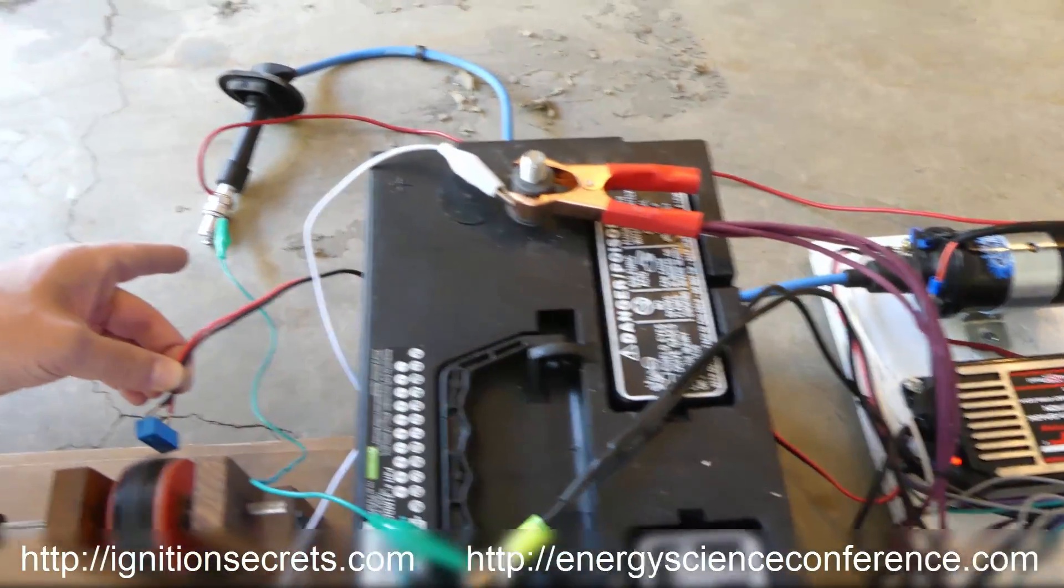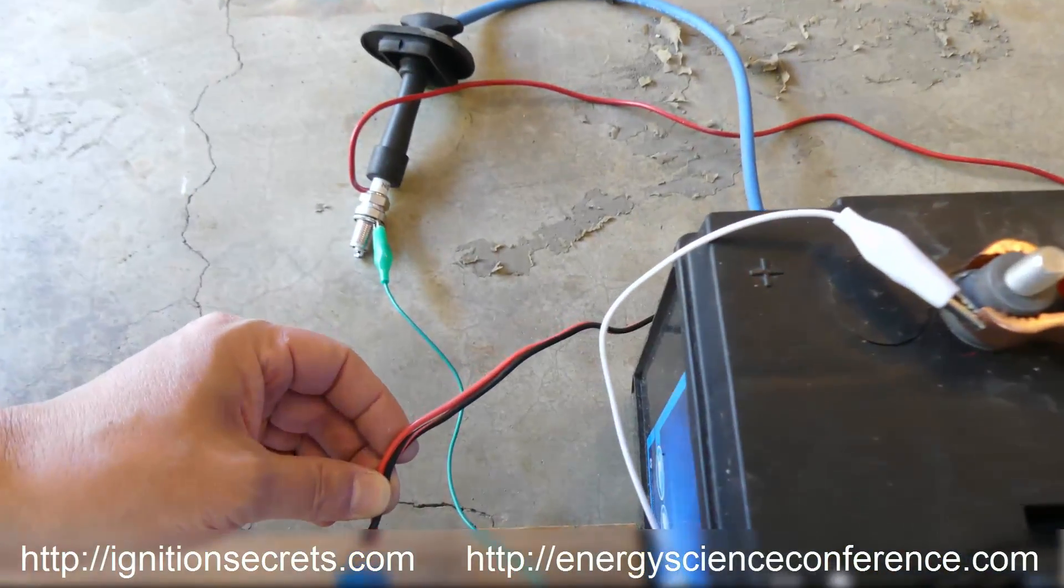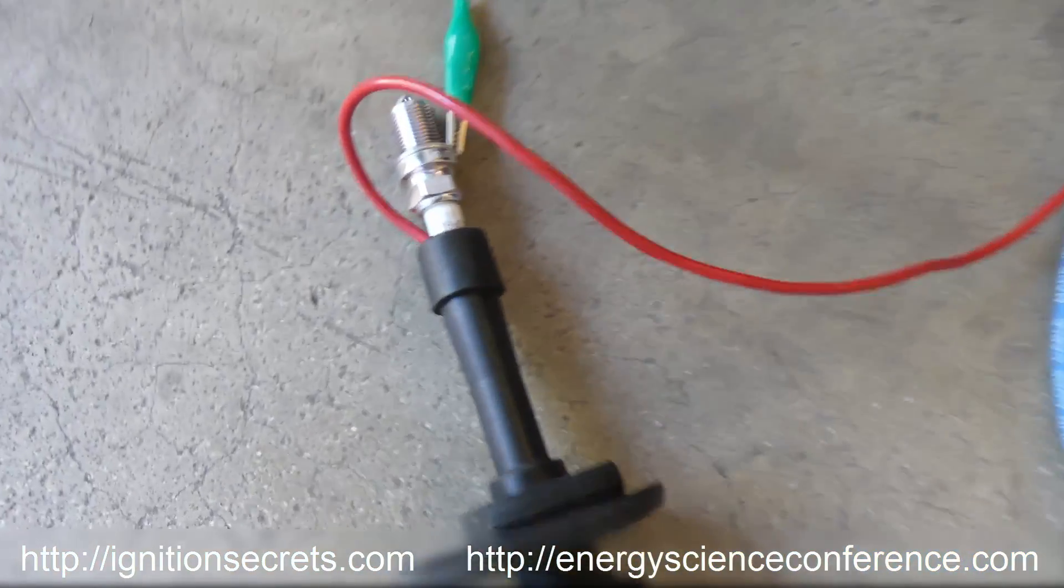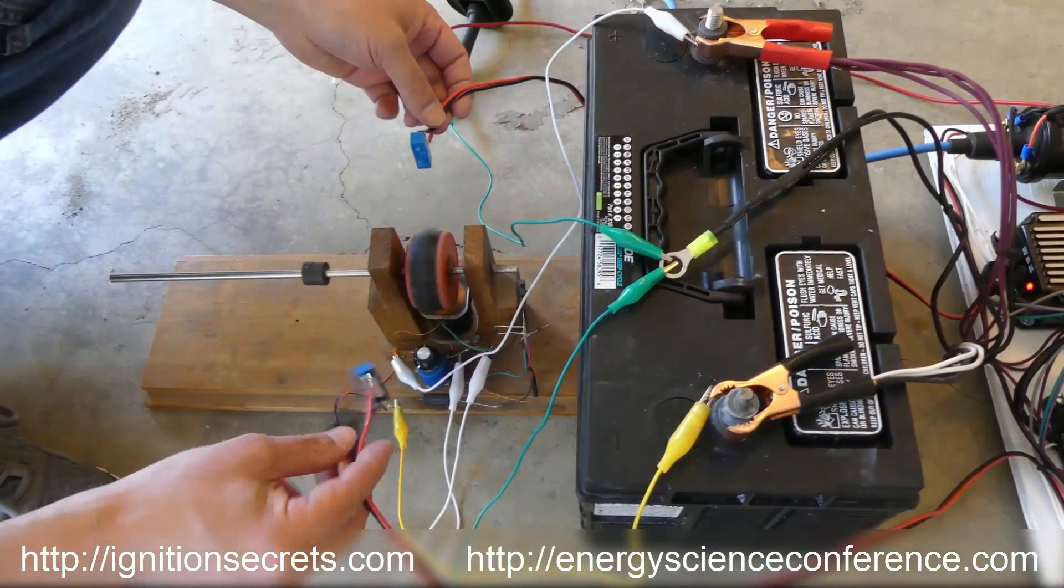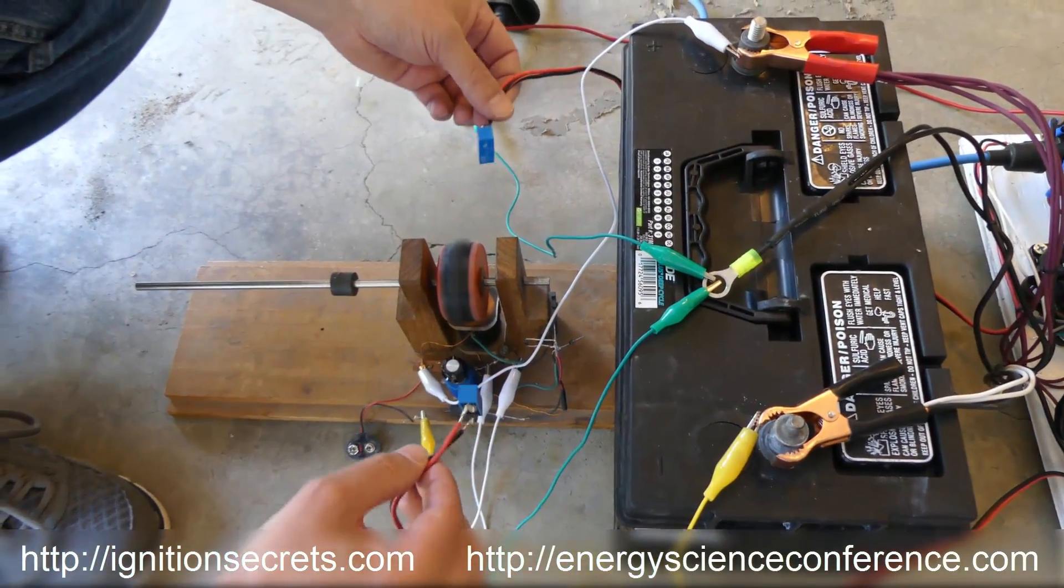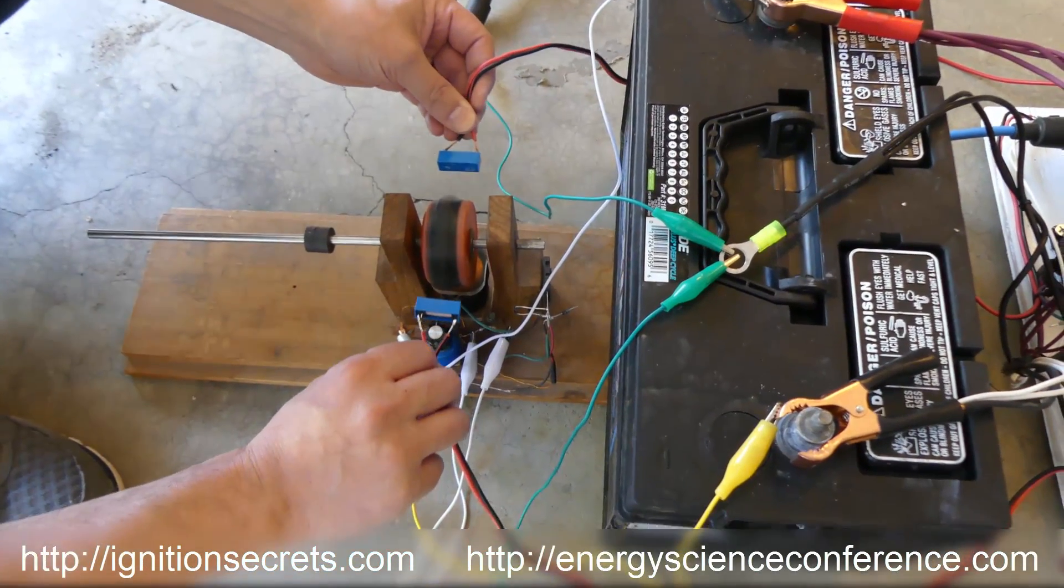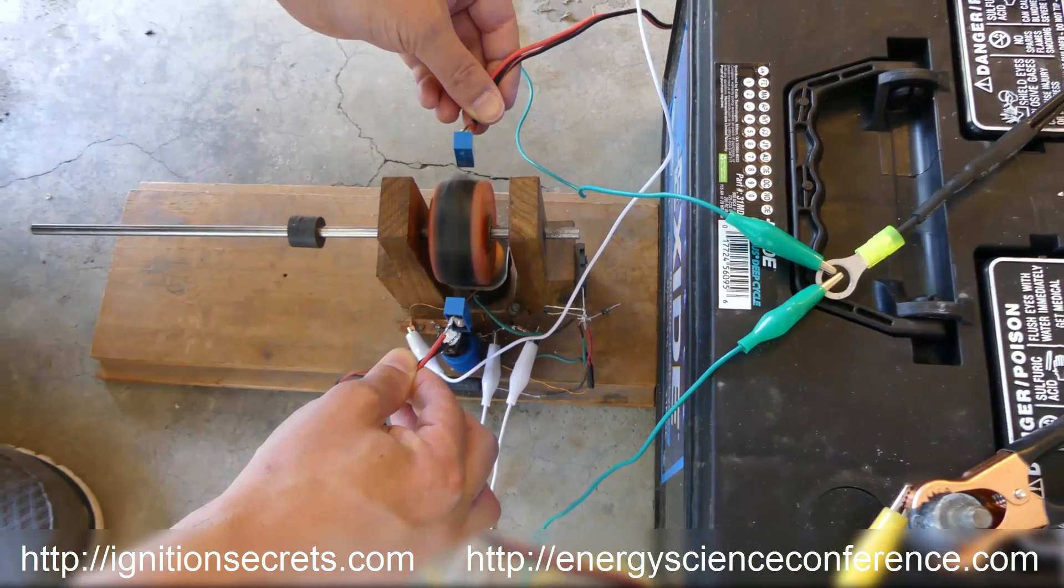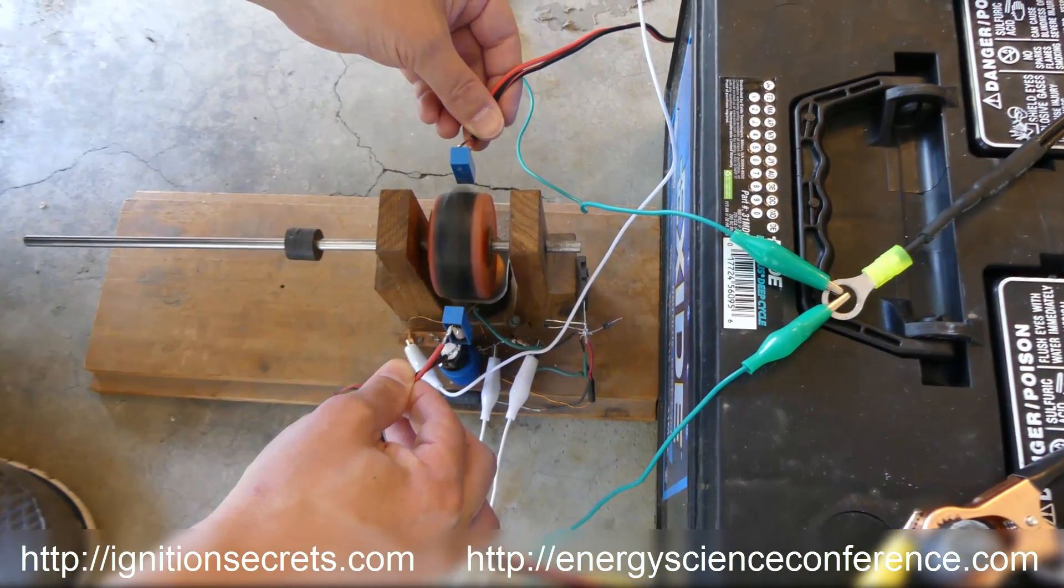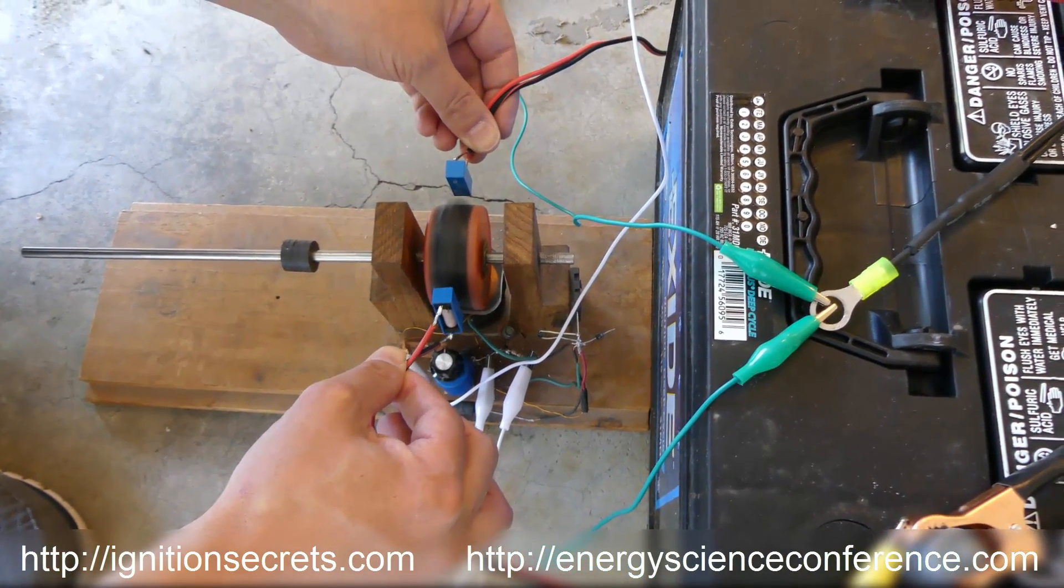Okay, so you can see the spark on both plugs. You can see that spark there, and you can see it here. And so, it's important that with these reed switches, you do not want them this way because that's not how it works. You want them this way, okay?